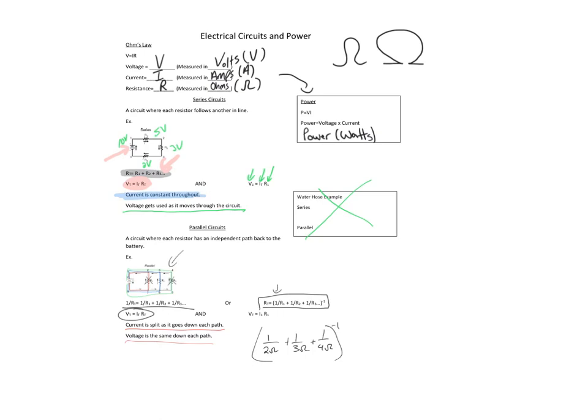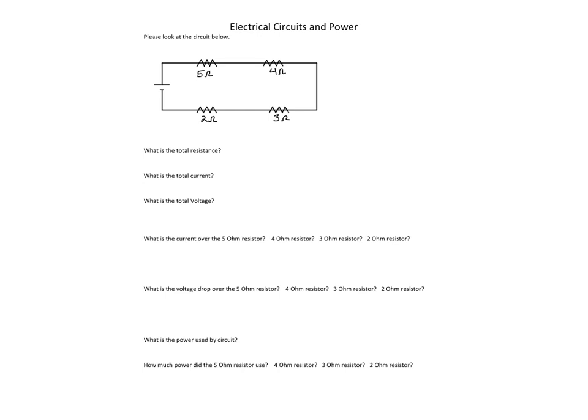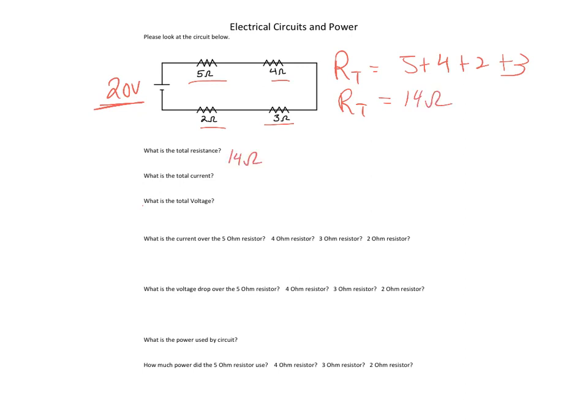Let me give you a couple of example problems. Please look at the circuit below. What is the total resistance, total current, and total voltage? Let's say the voltage is 20 volts. In a series circuit, total resistance is just R1 plus R2 plus R3 plus R4 — so 5 plus 4 plus 2 plus 3 — giving a total resistance of 14 ohms.